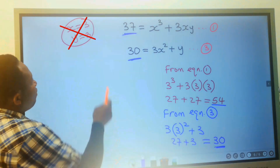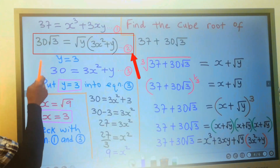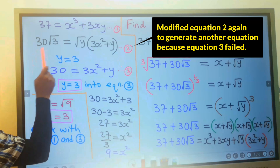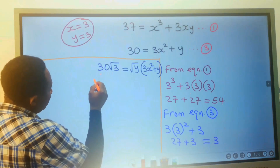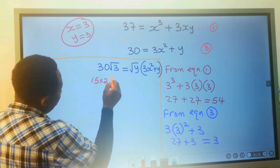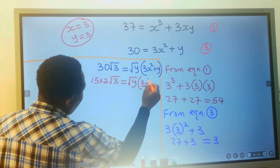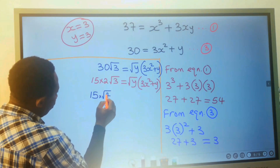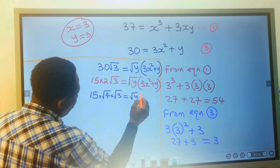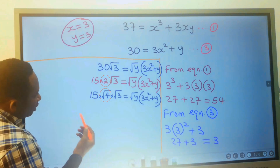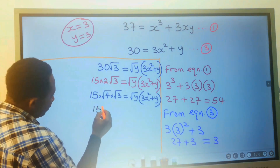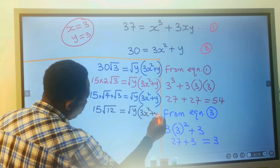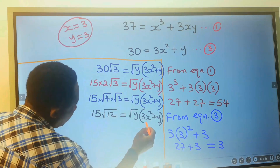That means the values of our x and y are wrong. We go back to equation 2 and modify the 30. We write 30 as 15 times 2, multiplied by the square root of y, times (3x squared plus y). We leave 15 here; the 2 becomes the square root of 4 times the square root of 3. According to the law of surds, this becomes 15 multiplied by the square root of 12, times the square root of y, times (3x squared plus y). This new modification gives us equation 4.